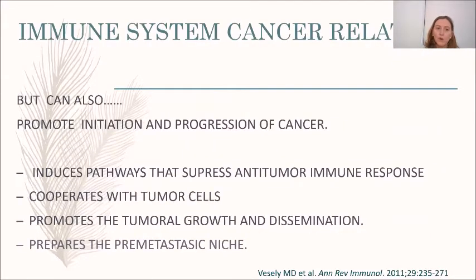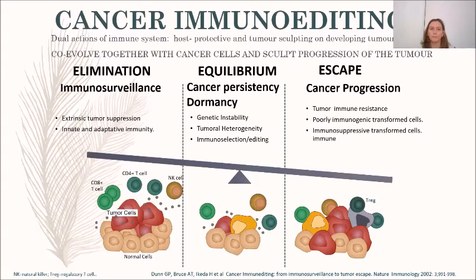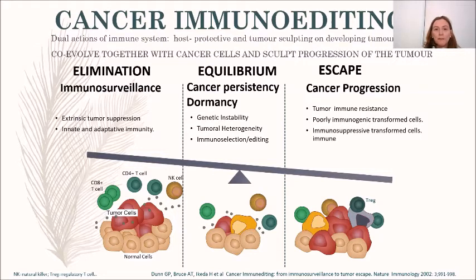However, the immune system can also promote initiation and progression of cancer by inducing pathways that suppress the tumor immune response, cooperating with tumor cells, promoting tumor growth and dissemination, and preparing the pre-metastatic niche. So the immune system has dual actions — it is host protective but can also co-evolve with cancer cells and sculpt tumor progression in a process called cancer immune editing.